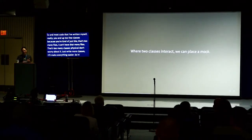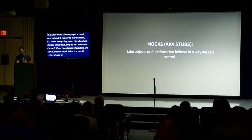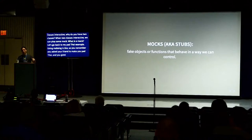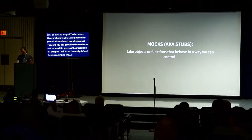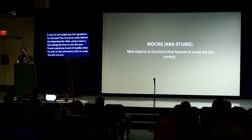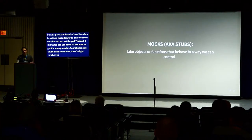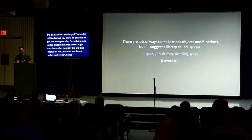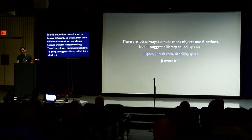When two classes interact, we can place a mock. What is a mock? Using mocks is like this: you asked your friend to make you Pad Thai and gave him the phone number of a store to order ingredients. Using a mock is like asking the store to only sell your friend a particular brand of noodles when he calls. Afterwards, if the Pad Thai still tastes bad, you know it's not because he got the wrong noodles. Mocks, also called stubs, are fake objects or functions that behave in a way we can control. I'm going to suggest a library called Spies, which I wrote.